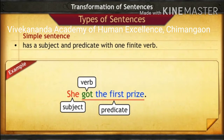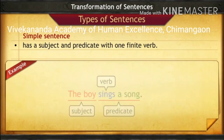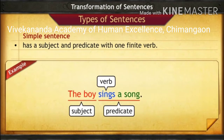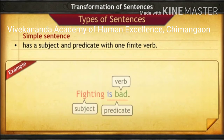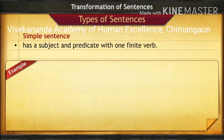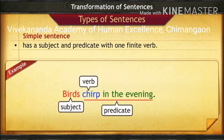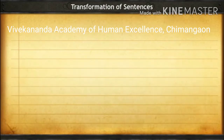She got the prize — 'she' is the subject, 'got' is the verb, and the remaining part is the predicate. Another example: 'The boy sings a song.' Also, 'Fighting is bad' — here 'fighting' is the subject. And 'Birds chirp in the evening' — 'birds' is the subject, 'chirp' is the verb, and 'chirp in the evening' is the predicate.